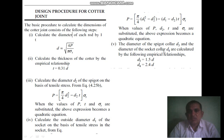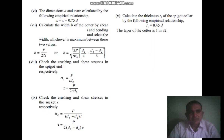The diameter of the spigot collar D3 and the diameter of the socket collar D4 are calculated by the following empirical relations: D3 = 1.5 × d and D4 = 2.4 × d. The dimensions a and c (the clearances between the collars and supports) are calculated by the empirical relation: a = c = 0.7 × d.